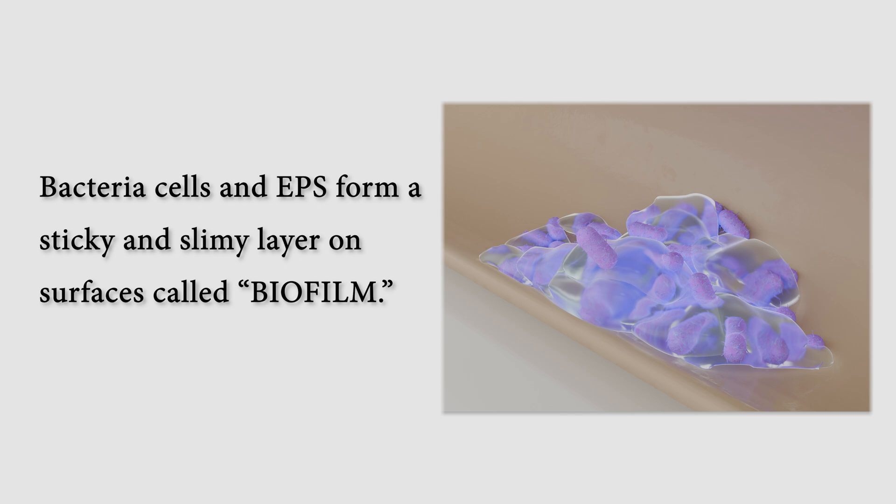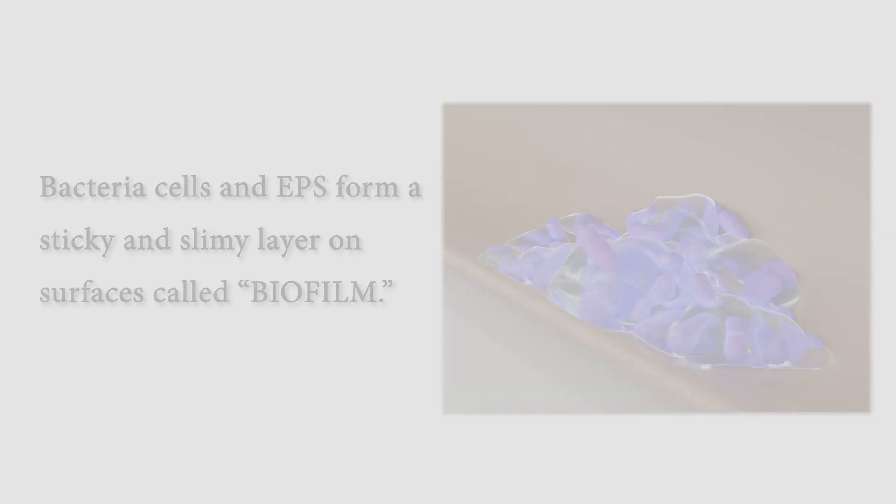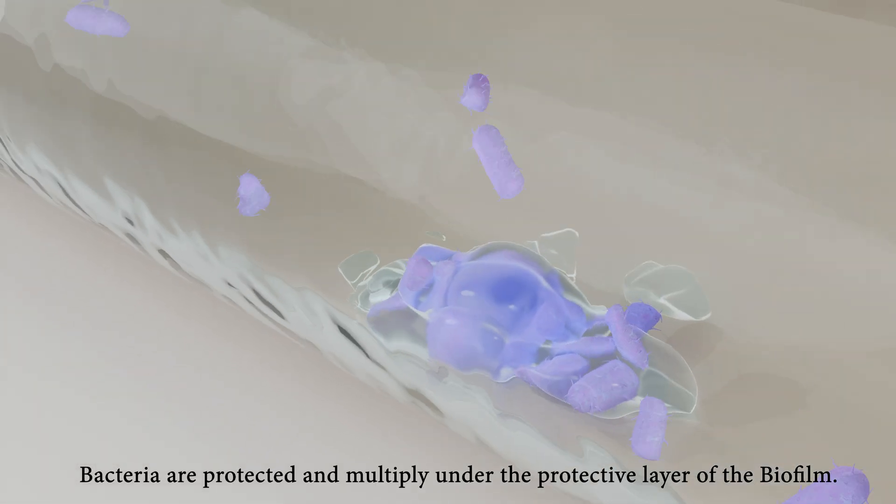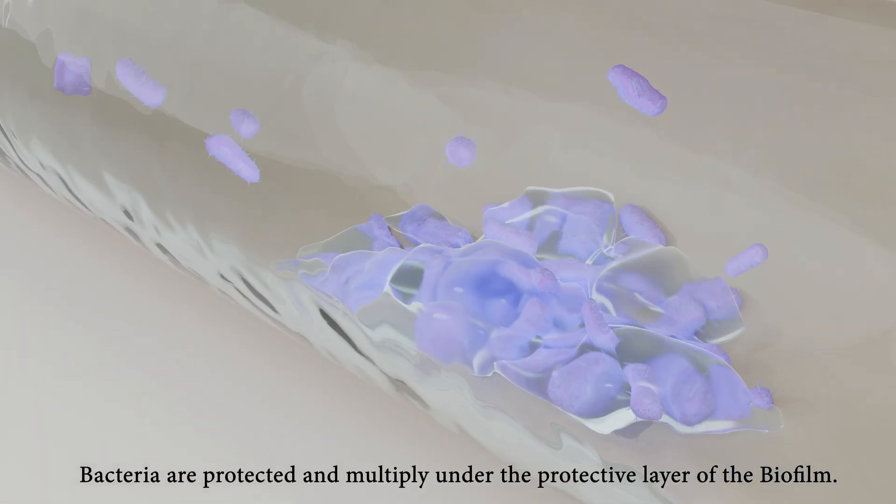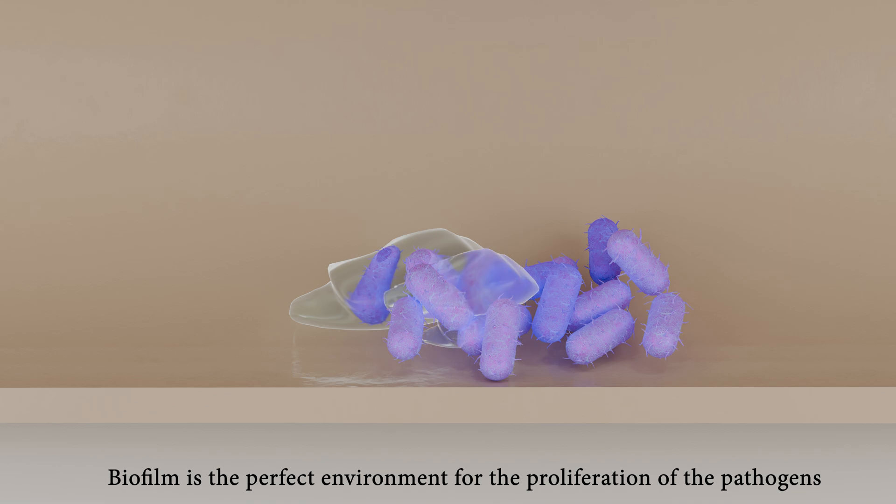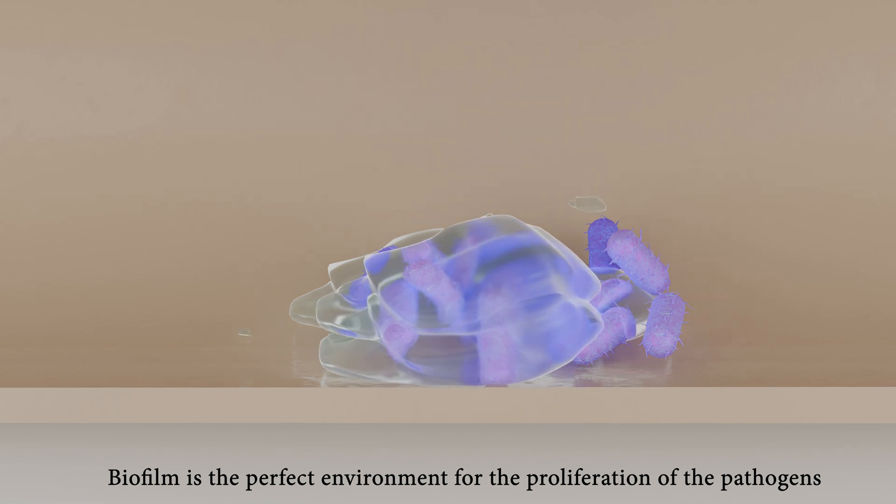Bacteria cells and EPS form a sticky and slimy layer on surfaces called biofilm. Bacteria are protected and multiply under the protective layer of the biofilm. Biofilm is the perfect environment for the proliferation of pathogens.